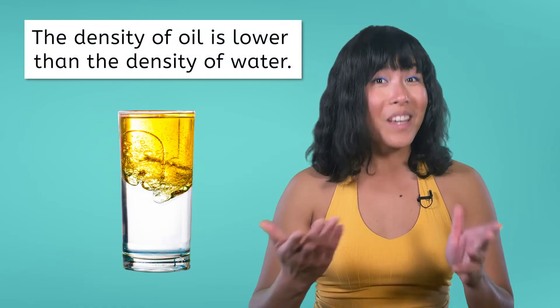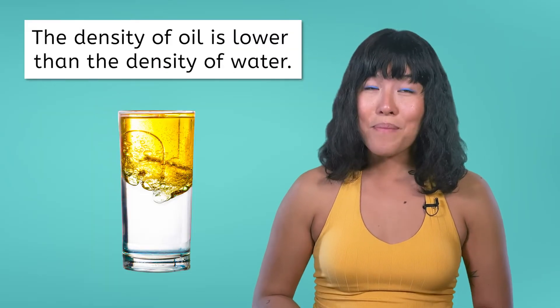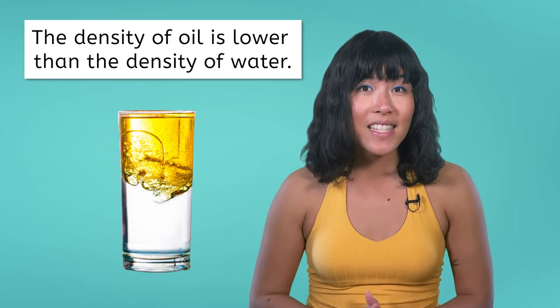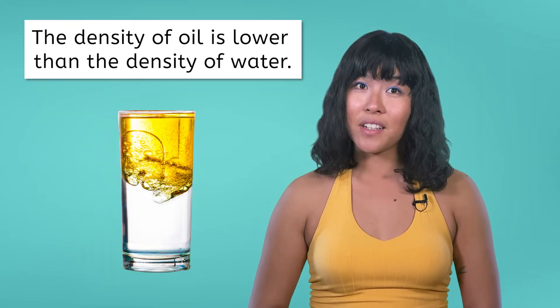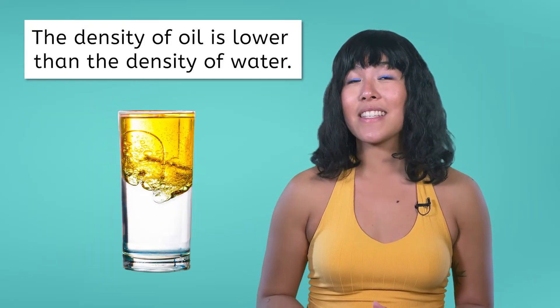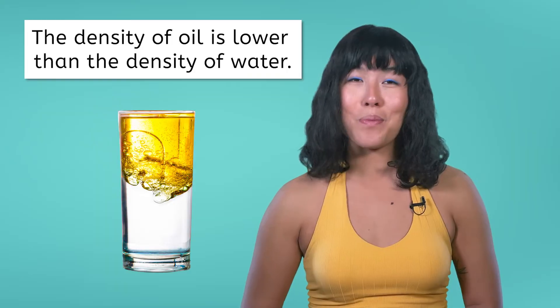What do you think that means about the density of oil compared to the density of water from the opening of this lesson? The oil has a lower density than water, meaning its density is less than one gram per milliliter. In fact, olive oil has a density of 0.9 grams per milliliter.